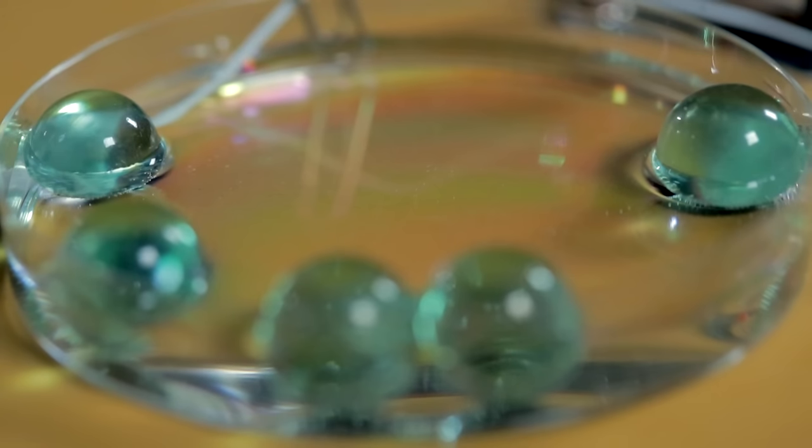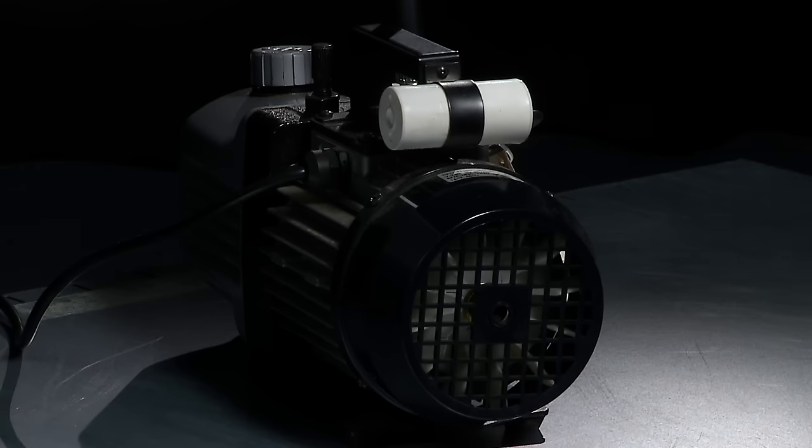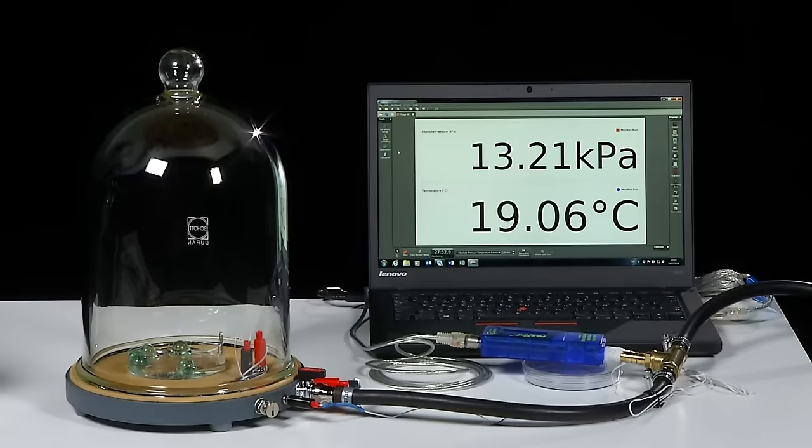Inside the chamber we place a Petri dish with liquid water. After the chamber has been sealed the pump is switched on. Both pressure and temperature start decreasing immediately.